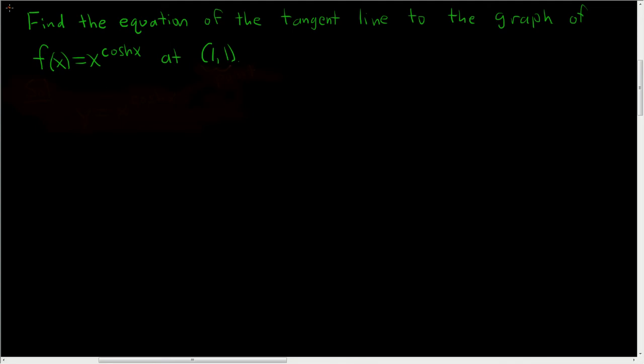Find the equation of the tangent line to the graph of f(x) = x^(cos x) at (1,1).